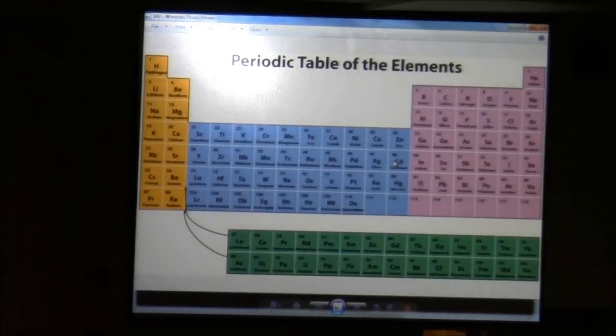So every element in the periodic table has its own unique absorption and emission line signature. That's good. We can use that. If we see that particular signature out in space, we know what we're looking at.